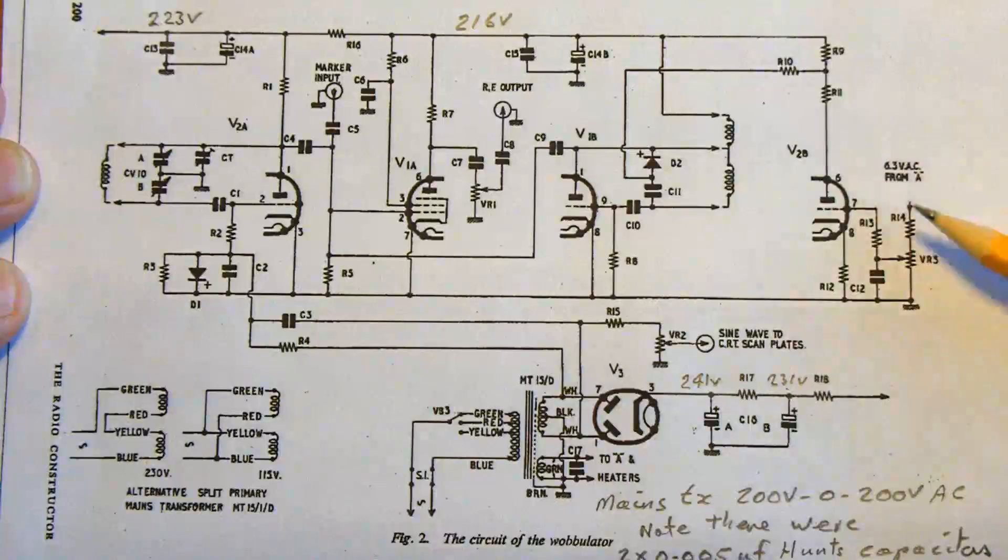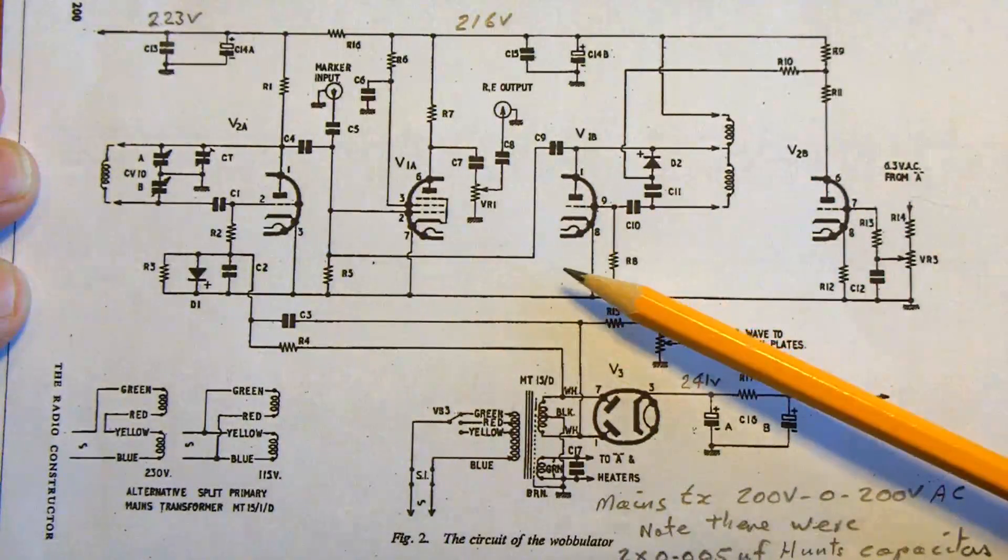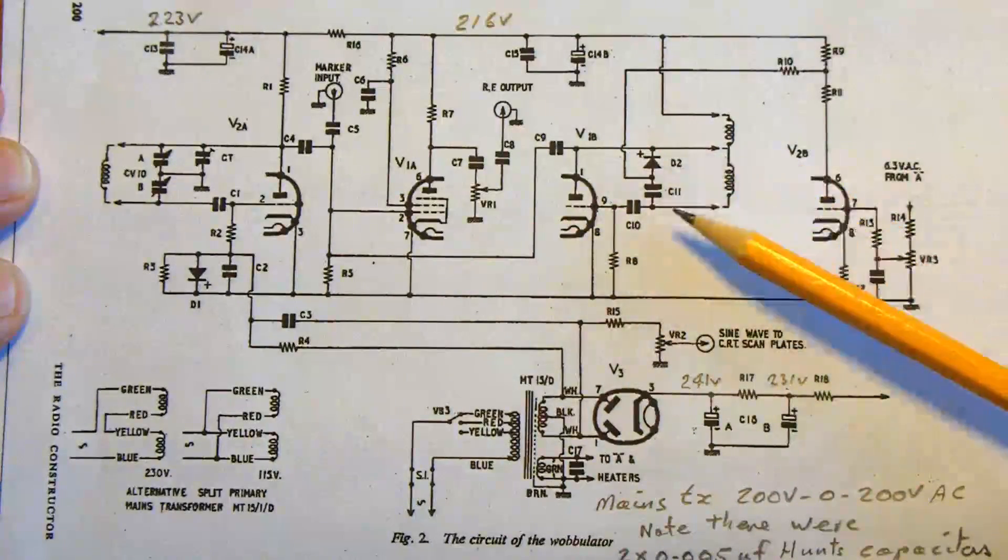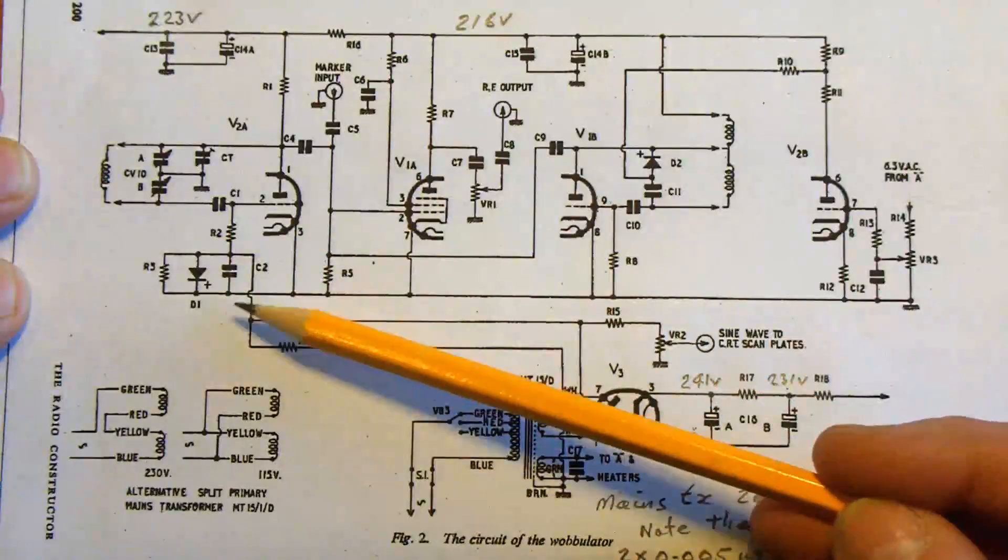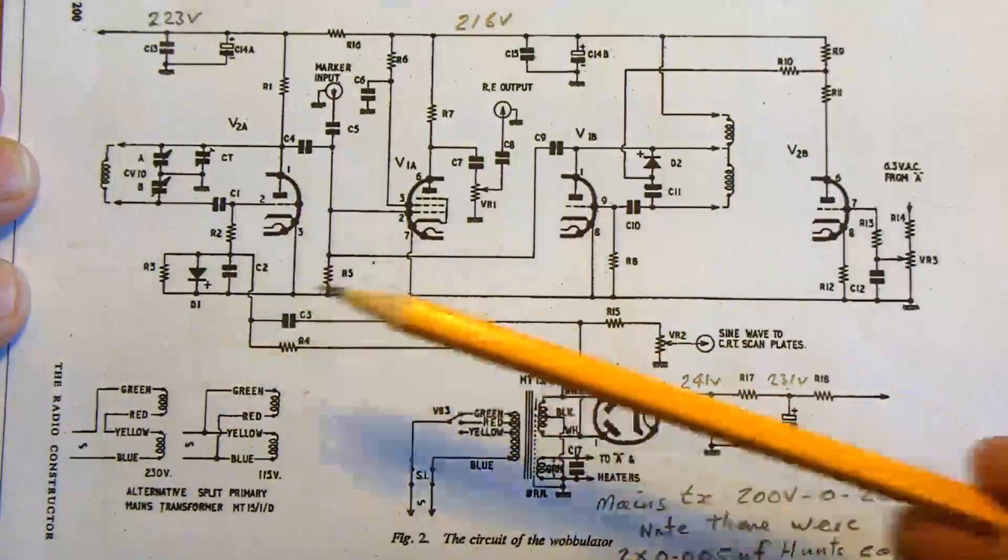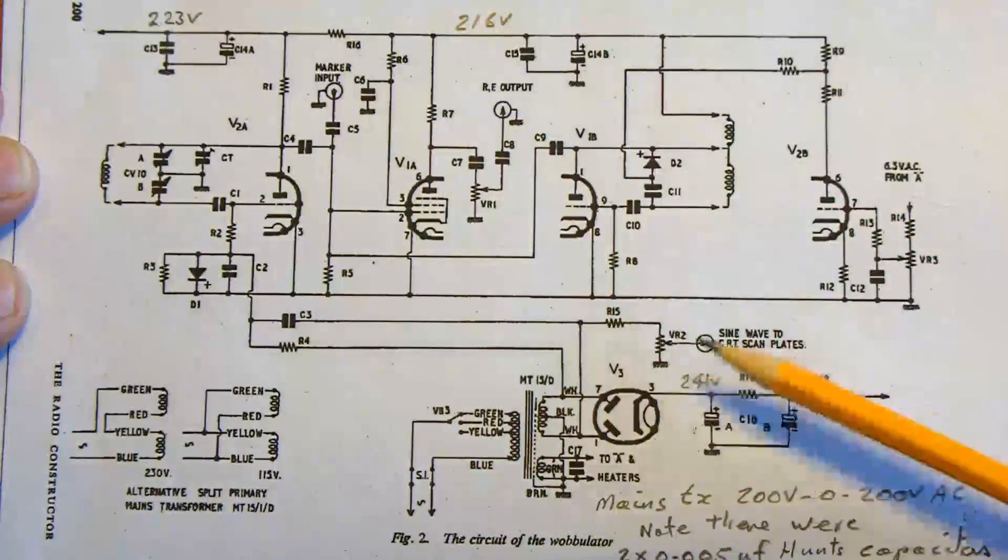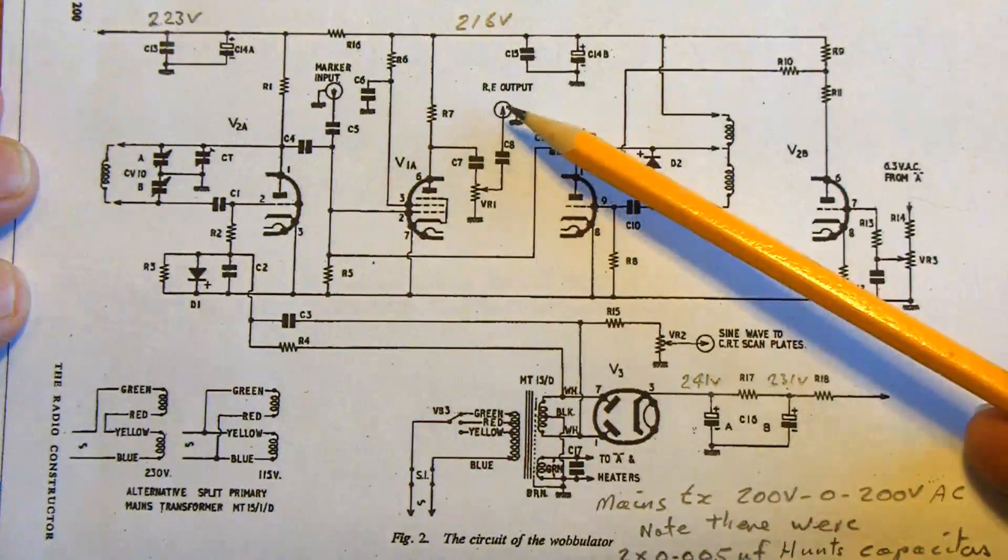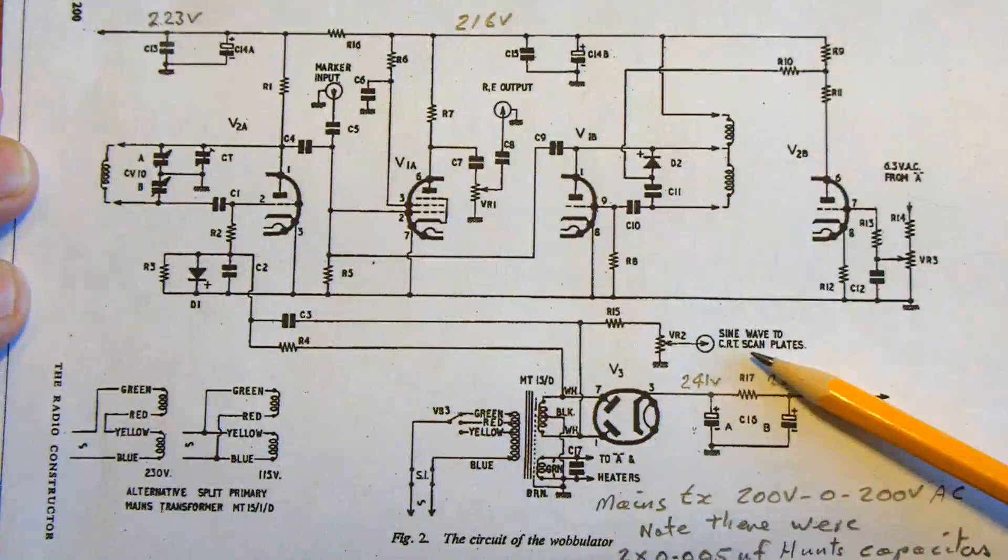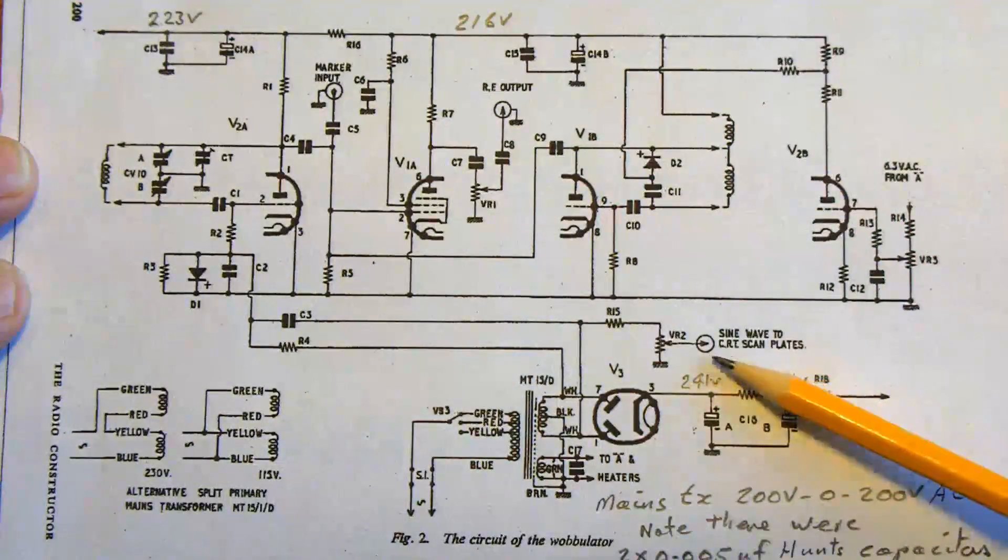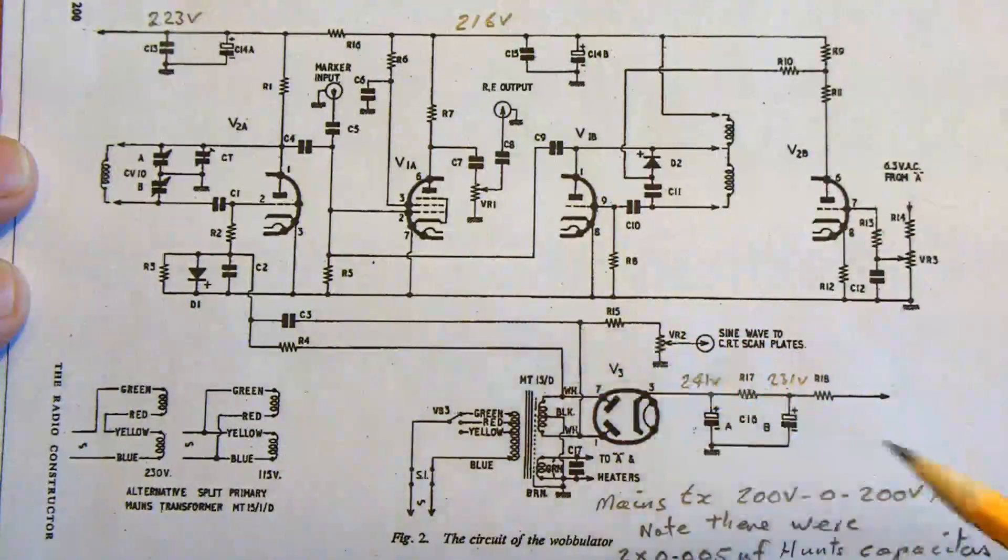And then I'm not sure what's happening here. Again, this is some sort of oscillator here, an oscillator over here. I'm not sure what's going on here. The RF output is there in the middle of the page. And the sine wave scan to the plates, that's the 50 Hz out, is there. So I've just got to get my head round this.